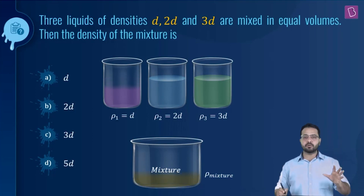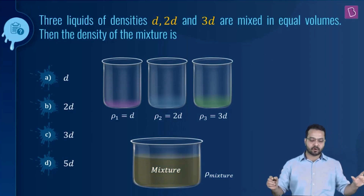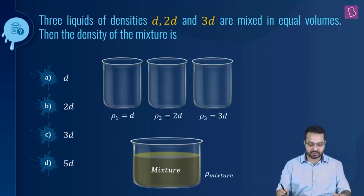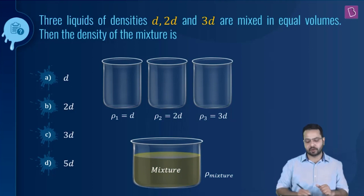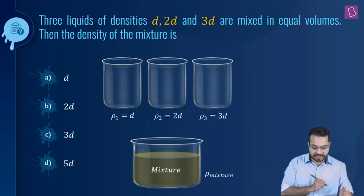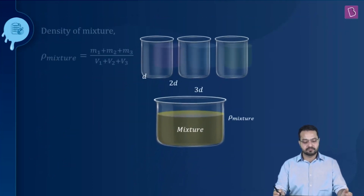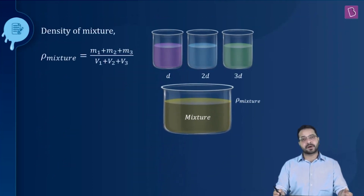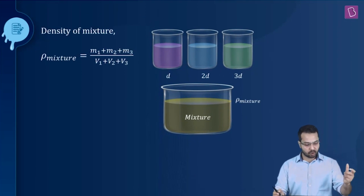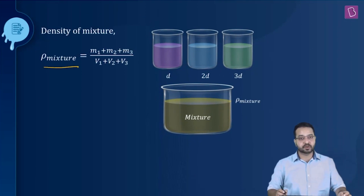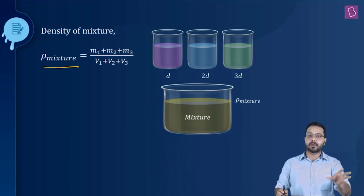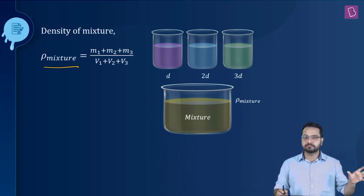We have taken equal volumes of all three liquids and made a mixture out of it. Now we want to find out what will be the density of the mixture. The density of the mixture is defined as the total mass divided by the total volume.